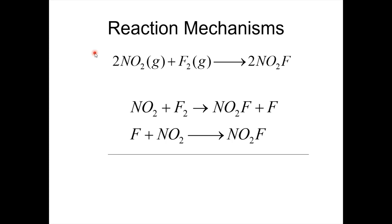The mechanism tells us what actually happens. In step one, one NO2 molecule crashes with F2, kicks out one F, forming one NO2F and leaving a lone F atom. A lone F atom has seven valence electrons and is not stable. In step two, that F atom gets together with another NO2 and pulls it in, forming the second NO2F. So this is a two-step mechanism: NO2 collides with F2, then the intermediate F atom attaches to another NO2.